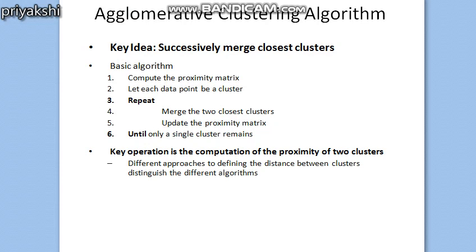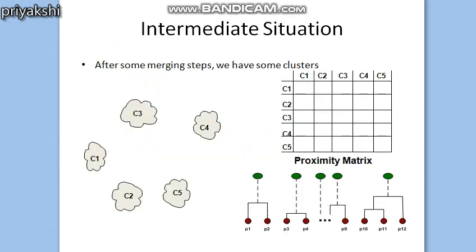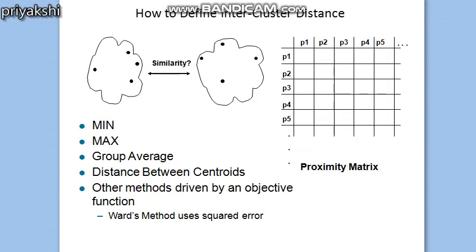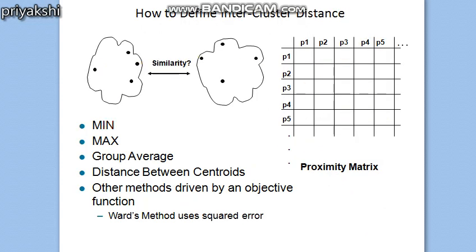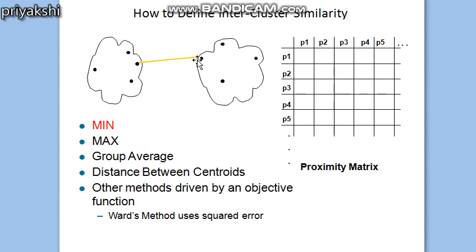There are three types of hierarchical clustering: mean, max, and group average. We will discuss this example using mean, or single-link agglomerative clustering. In single-link agglomerative clustering, whenever we update the data matrix we take the minimum distance between the two clusters.